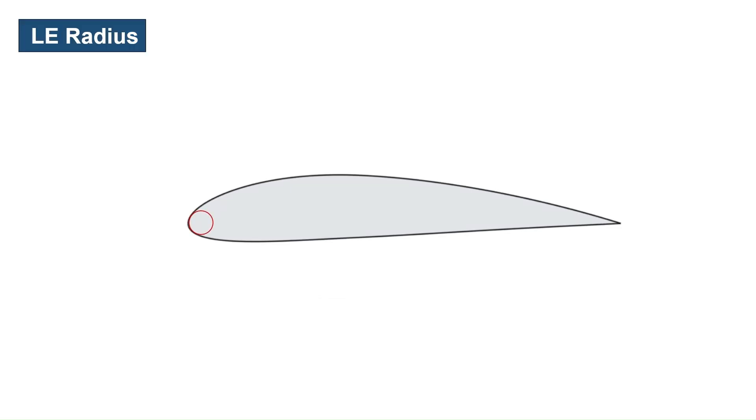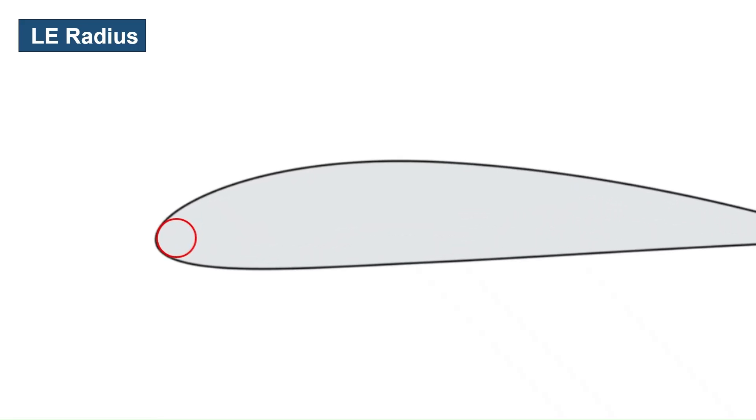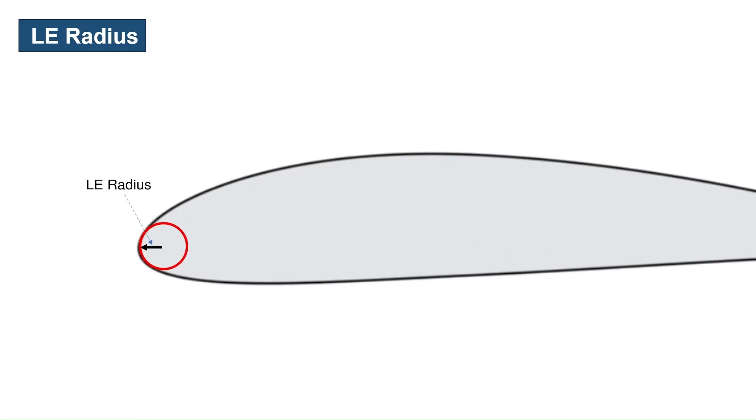If we draw a circle that is tangent to the leading edge and matches the curvature of the airfoil contour, then the radius of that circle is called the leading edge radius. It affects stall behavior and CL max, which we will discuss in the next videos.